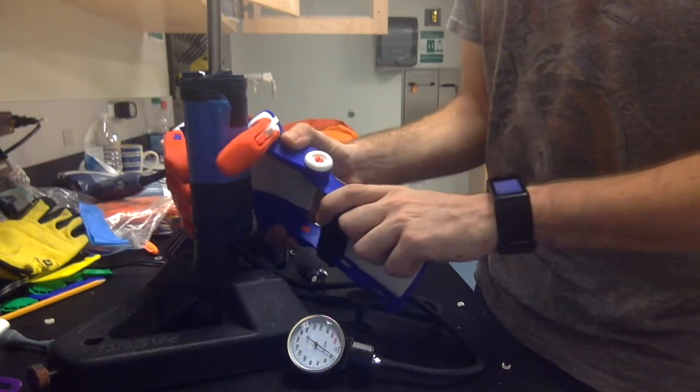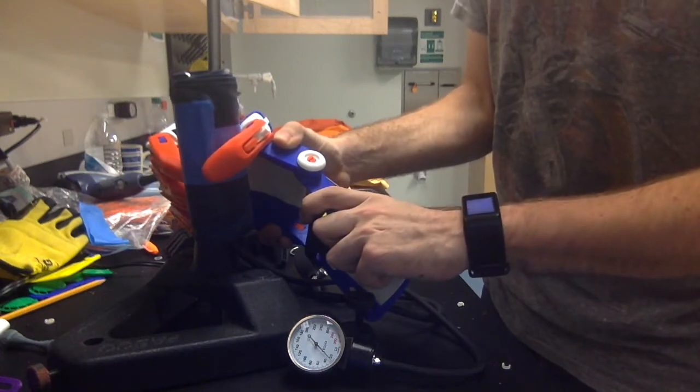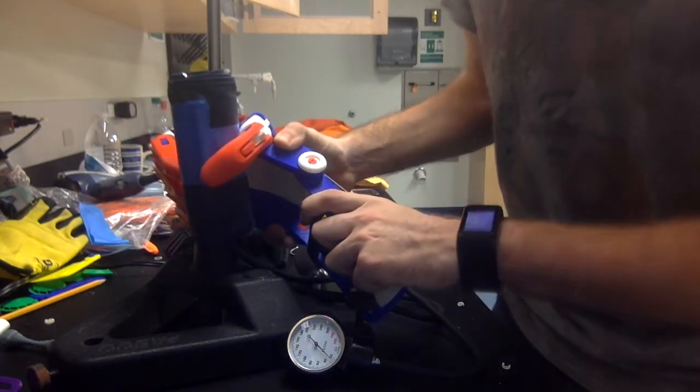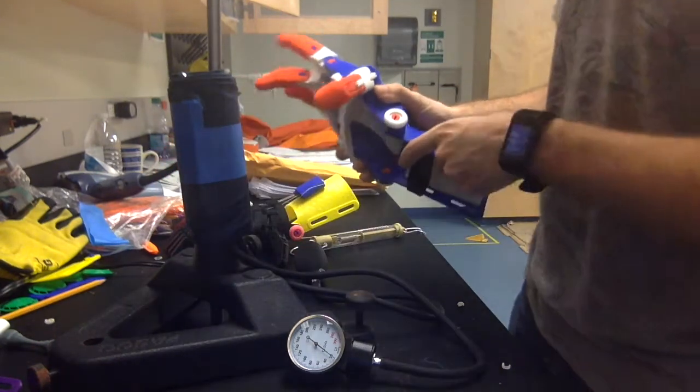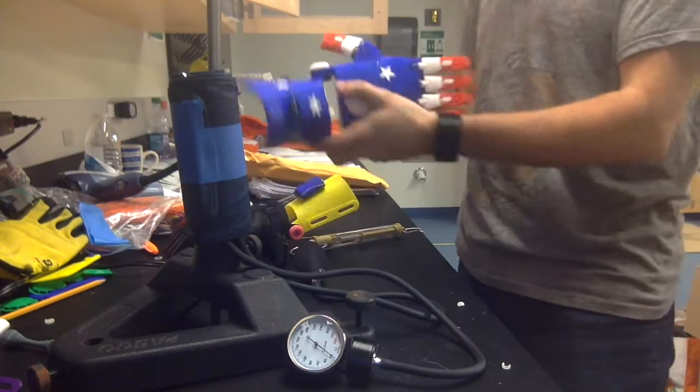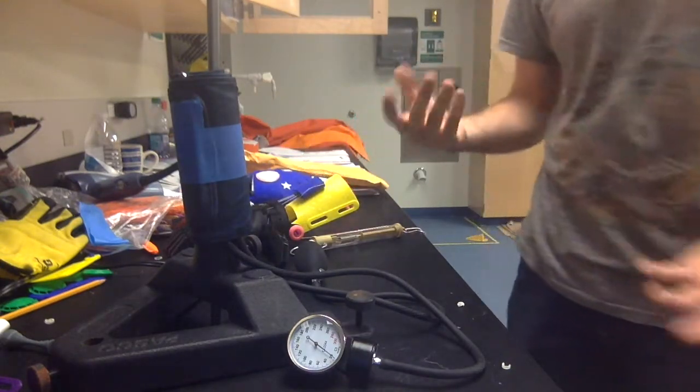And we're going to squeeze. And we see that we get about 10 millimeters of mercury out of the Phoenix hand. So that's basically the grip strength.